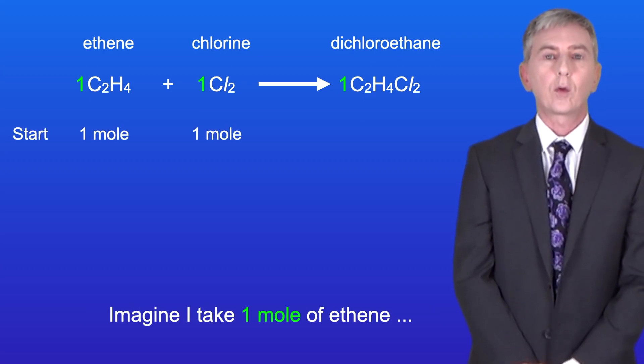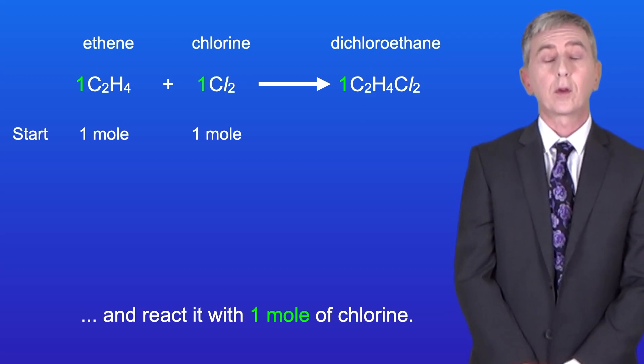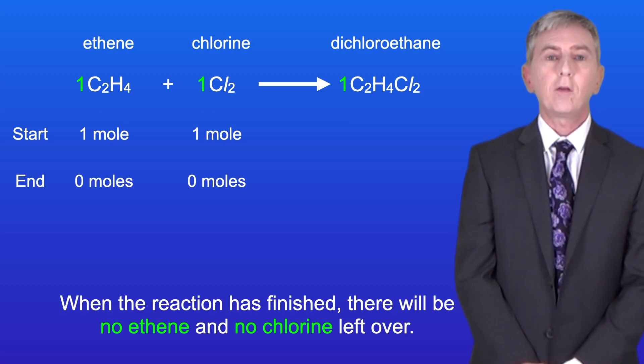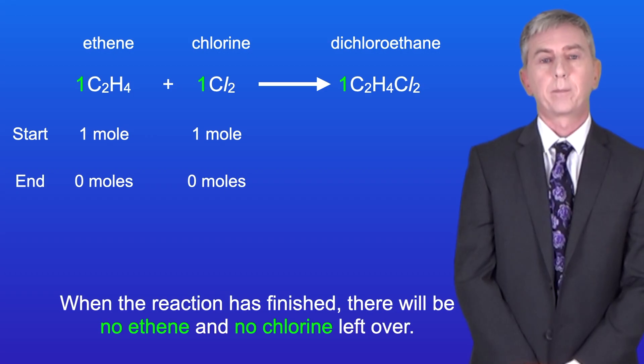So imagine I take one mole of ethene and react it with one mole of chlorine. When the reaction is finished there'll be no ethene and no chlorine left over.